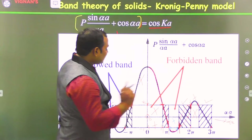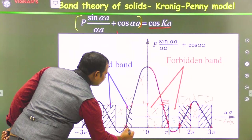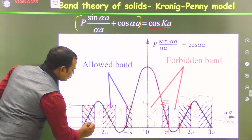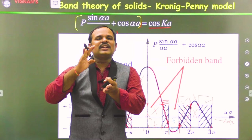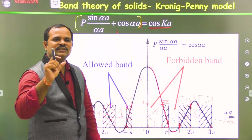You can see here the certain energy levels form a band — this is one allowed band, this is another allowed band, this is another allowed band. Only these bands of energy levels are allowed; in between, the energies are not allowed. From this we understand that in a solid, the energy levels form in the form of bands — energy bands.